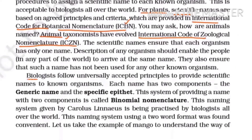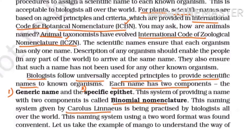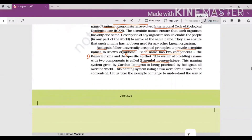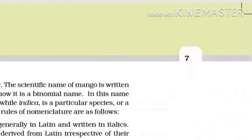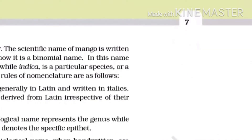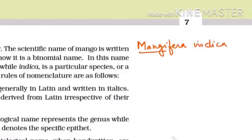Biologists follow universally accepted principles to provide scientific names. Each name has two components: first is the generic component and second is the specific epithet. A name with two components is known as binomial nomenclature, and it was given by Carl Linnaeus. For example, the biological name of mango is Mangifera indica — 'Mangifera' is the generic name and 'indica' is the specific epithet.